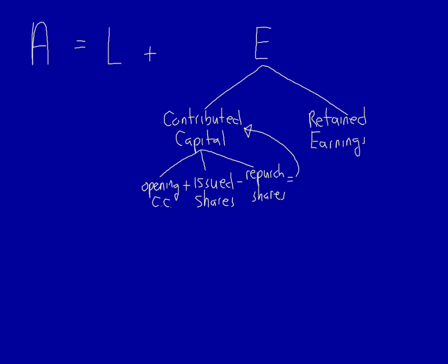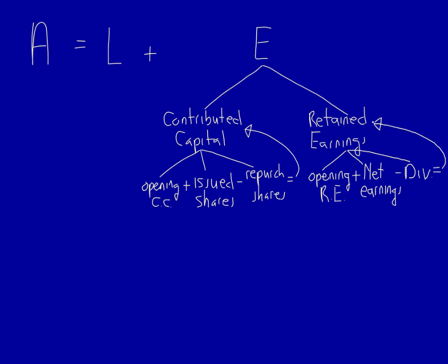Let's now look at retained earnings. Retained earnings is also made up of three items: opening retained earnings, plus net earnings, minus dividends. Retained earnings is made up of opening retained earnings from all past periods, plus net earnings from this period, minus dividends from this period. All of these together are equal to the closing retained earnings for the current period.